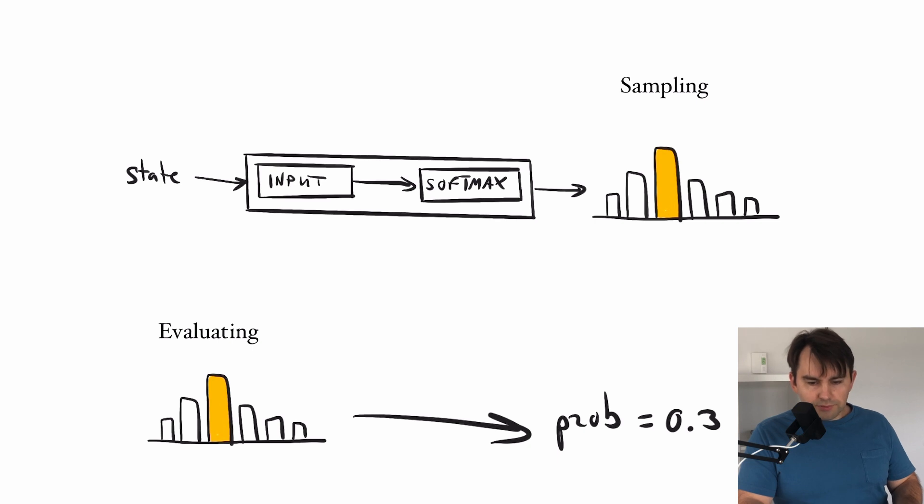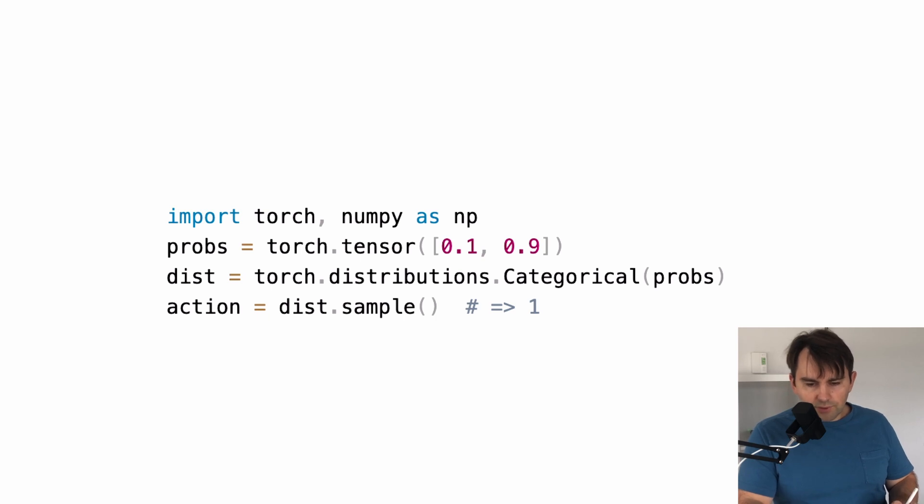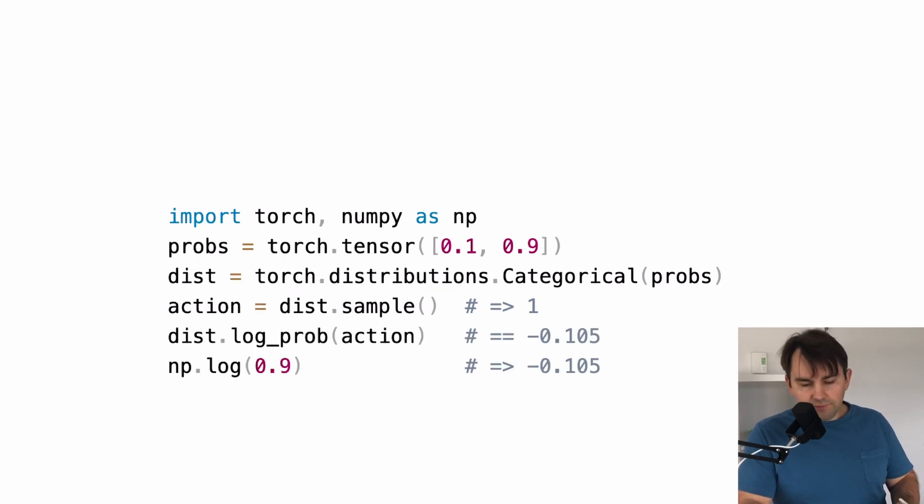We can use PyTorch to help us sample and evaluate these things. For example, we can use the Categorical class from torch.distributions, which takes a list of probabilities and builds a distribution for us. We can then sample this distribution to get our action. Don't forget, this is zero-based indexing. So number one here means the second element was chosen because it had the high probability.